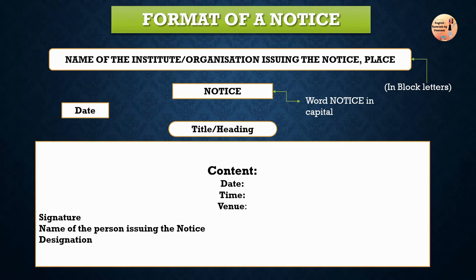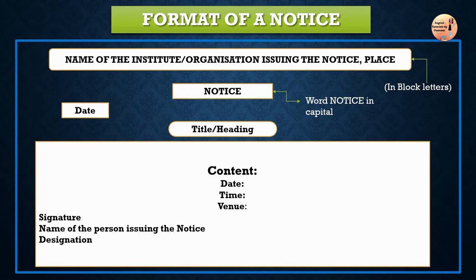In the body, we include important points only and use short, grammatically correct sentences. Ensure that the word limit has been observed and all value points have been included. After that, on the left-hand side below the body of the notice, we put the signature of the issuing authority followed by the name and designation of the authority. Most importantly, after completing your notice you have to enclose it in a box — the box is part of the format. If you forget to make a box in the examination, you will lose marks.